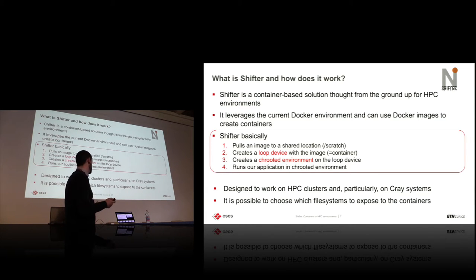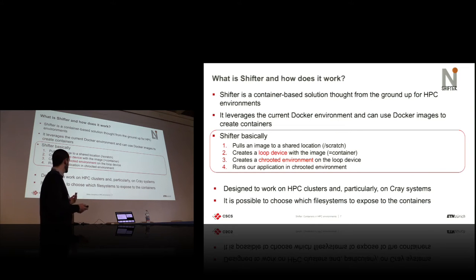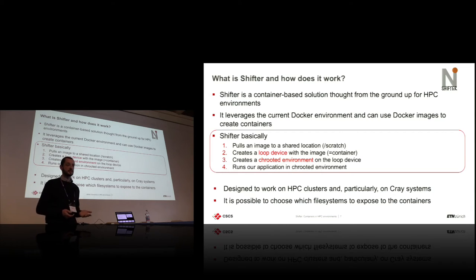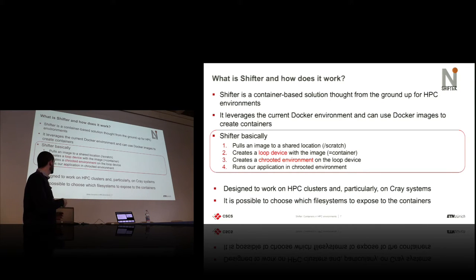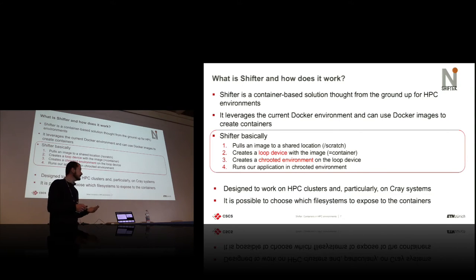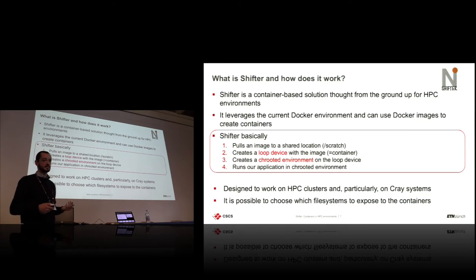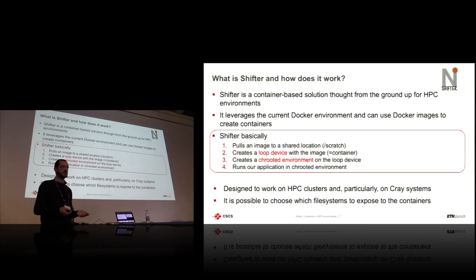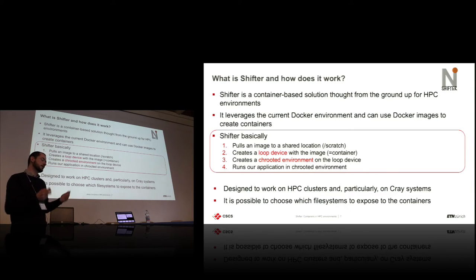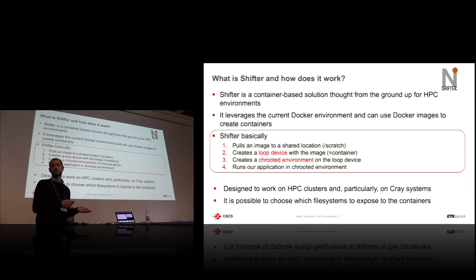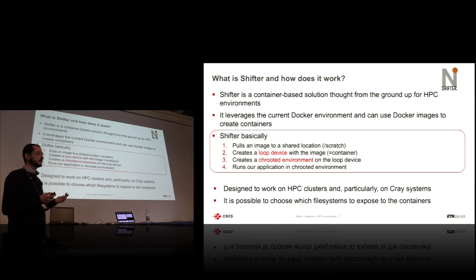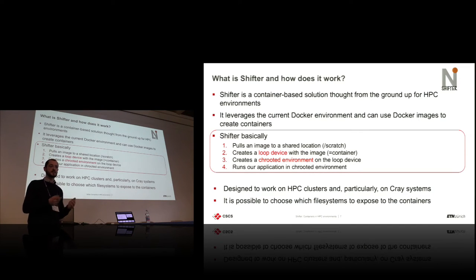Summarizing, what Shifter does is pull the image — usually you can put it on scratch, which is a nice change compared to Docker, which usually puts it on your local file system. It creates a loop device with the image, at which point we call it a container, and then simply creates a chroot on that and runs your application. Everything runs in user land, so your user will not be able to write or act as root on your exposed file systems. It also allows you to limit users to their own home directory or specific areas like a burst buffer.